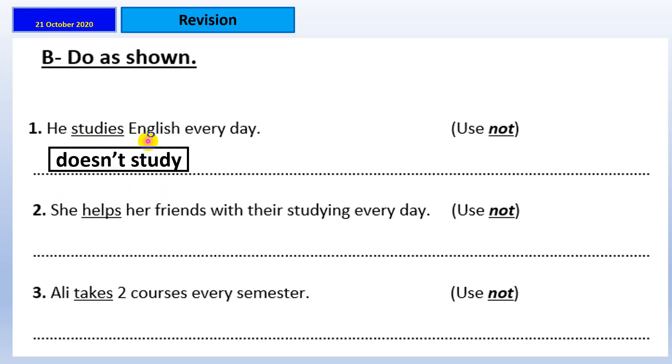So, the answer will be he doesn't study English every day. I want you now to pause the video, do number two and three, then come back to check your answers. Okay, she, again, singular subject in present simple. She doesn't help. Ali takes two courses every semester. We have here Ali again, singular subject. Ali doesn't take. And every for present simple. Ali doesn't take courses. Okay. I want to just pay attention here. The verb here was with S. When I negate the sentence, what? That's right. She doesn't help. Notice that we drop the S.